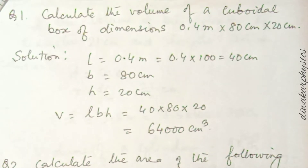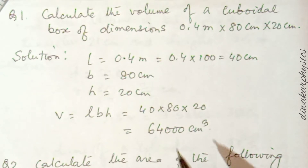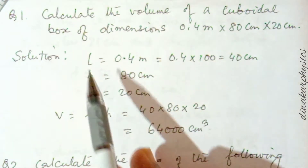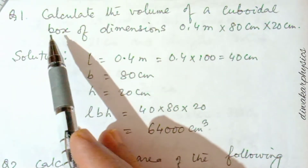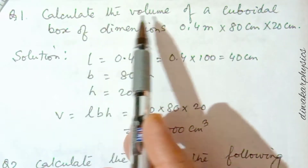Welcome, Class 7 students, to the Wacker Physics. Today we will solve some numericals from Chapter 1, which will be very useful for your exam. Question number one is: calculate the volume of a cuboidal box.